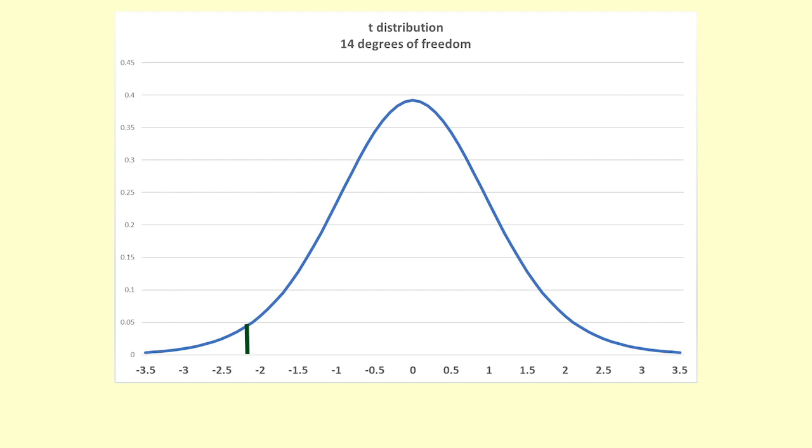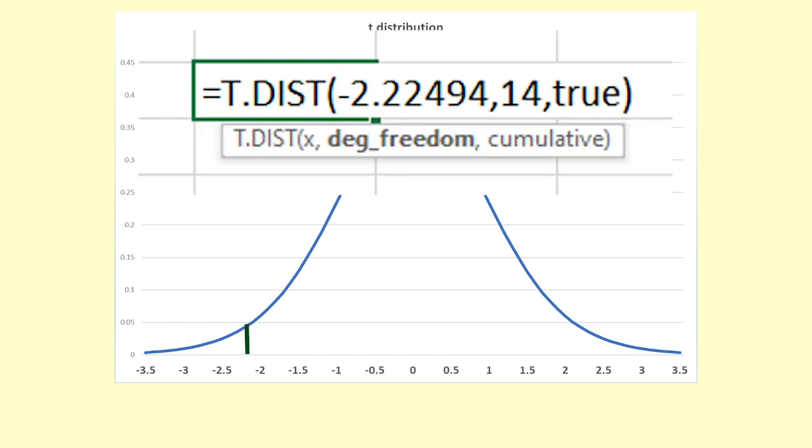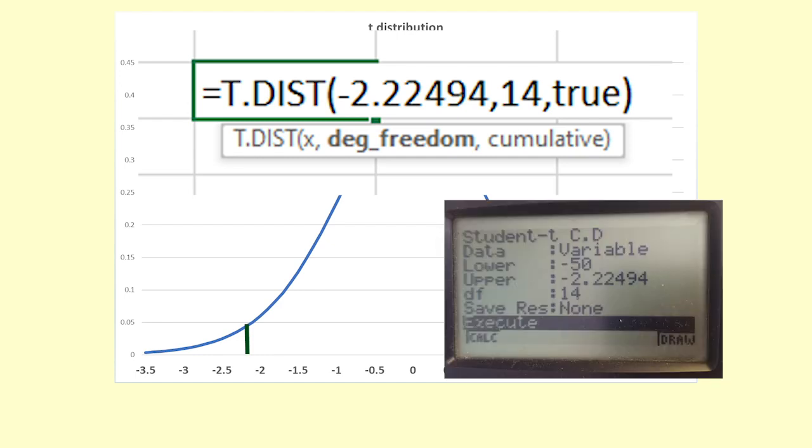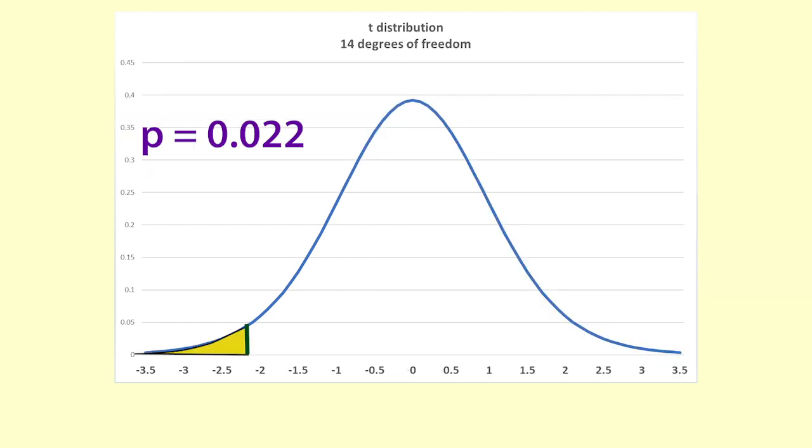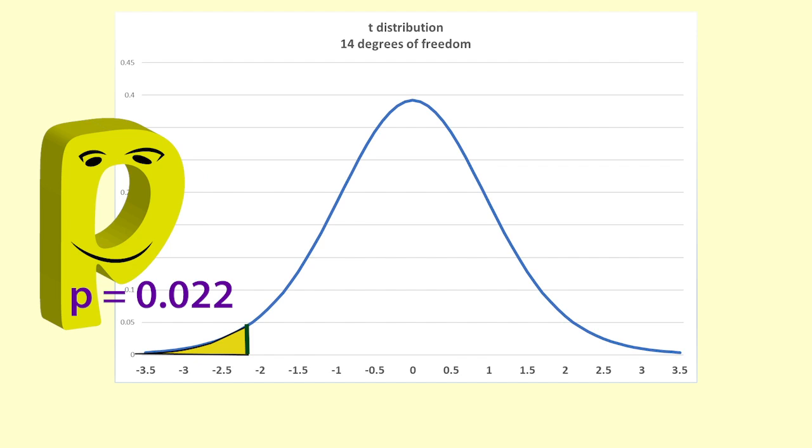Using Excel we use the function equals t dot dist negative 2.22494 14 true. Or we can use a calculator to find the probability. The probability is 0.021519 which we will round to 0.022. For the t distribution with 14 degrees of freedom the area under the graph to the left of negative 2.22494 is 0.022. This is the p-value we are looking for.